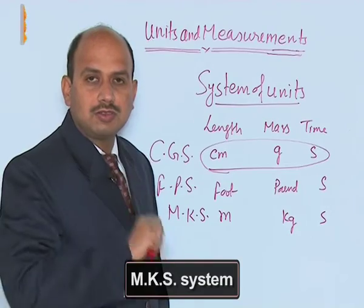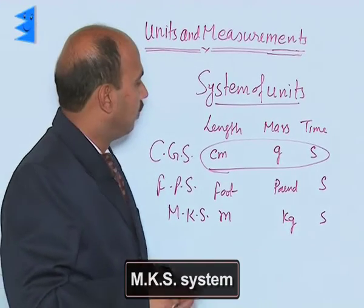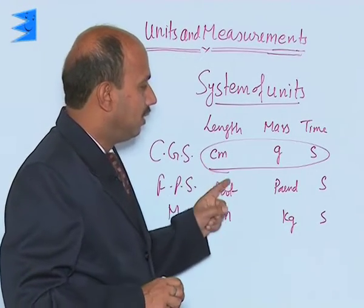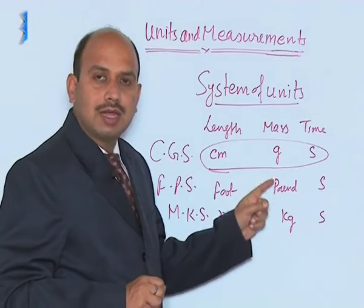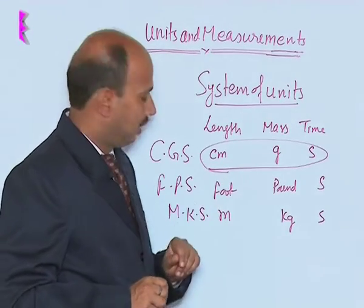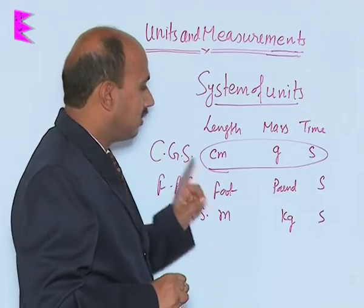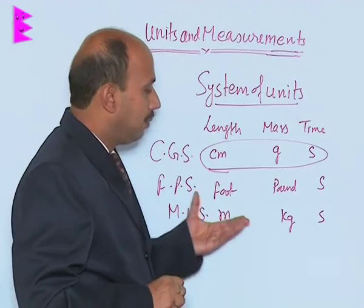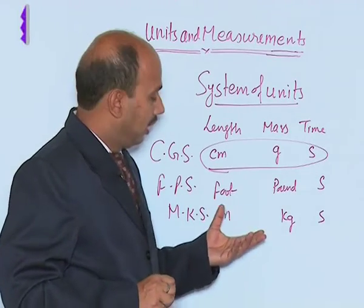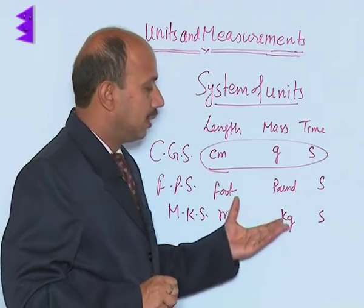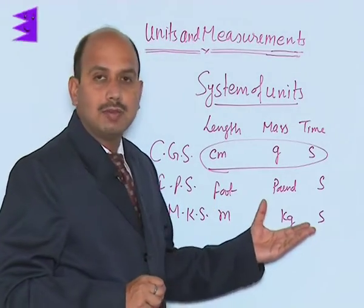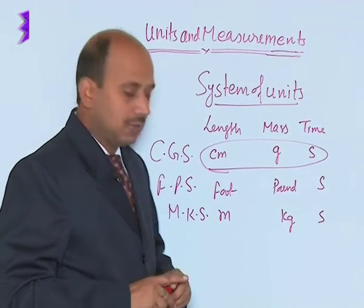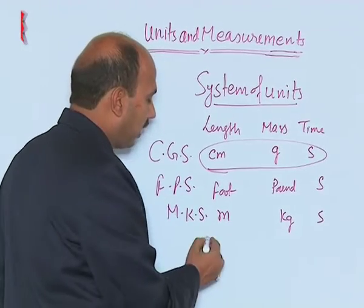So there are three systems of measurements. The first one is CGS where length is measured in centimeter, mass is in grams, time is in seconds. Another one is FPS — foot, pound, and second. The third one is MKS system where length is in meter, mass is in kg, and time is in second. There is one more system that is called SI system.